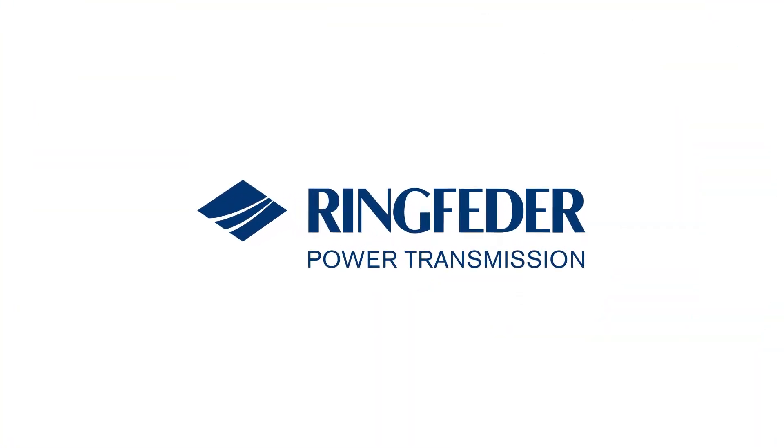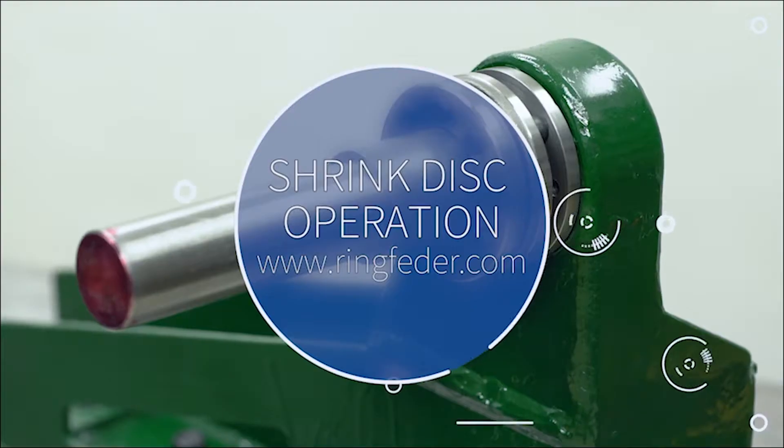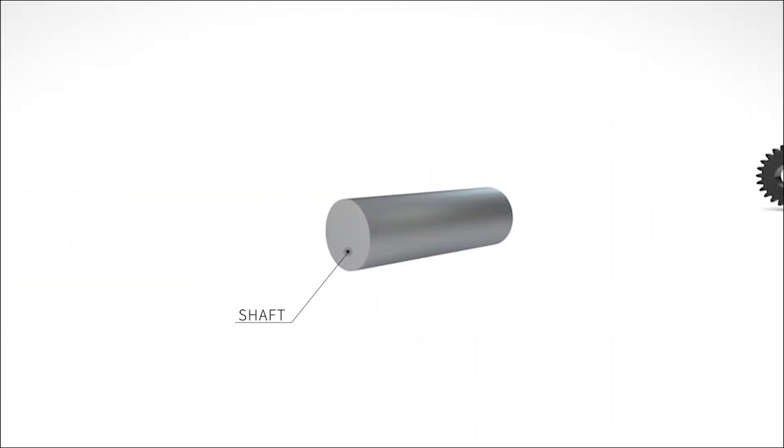A shrink disc is a simple, high-force shaft coupling that eliminates failure-prone keyed connections. Here's how it works.